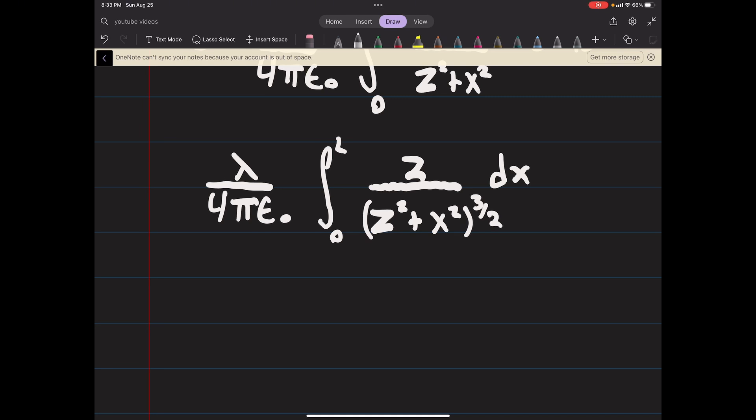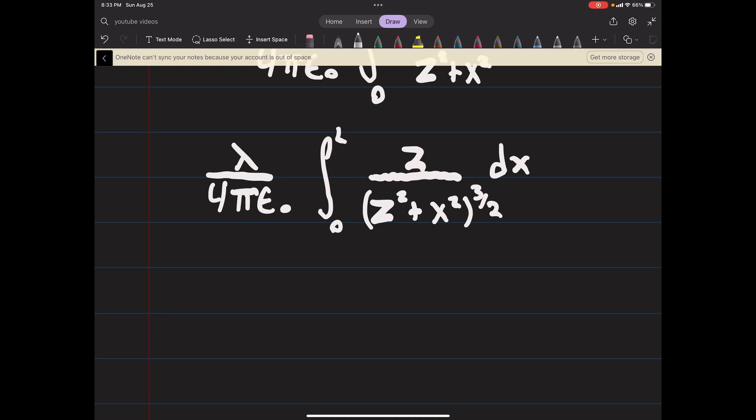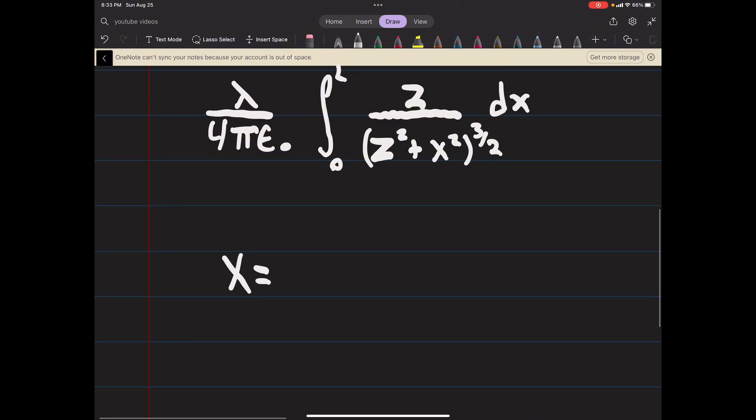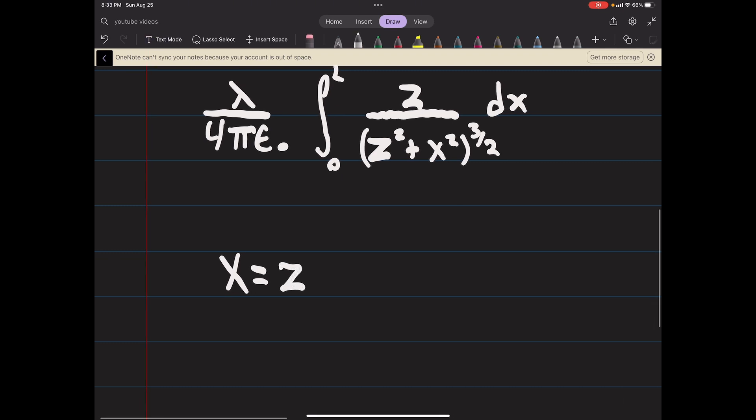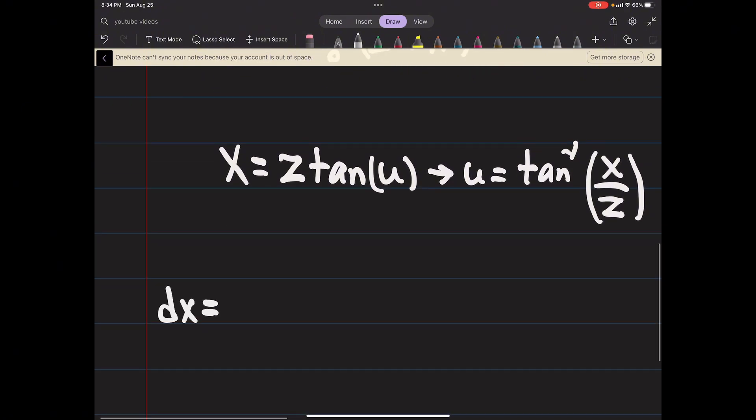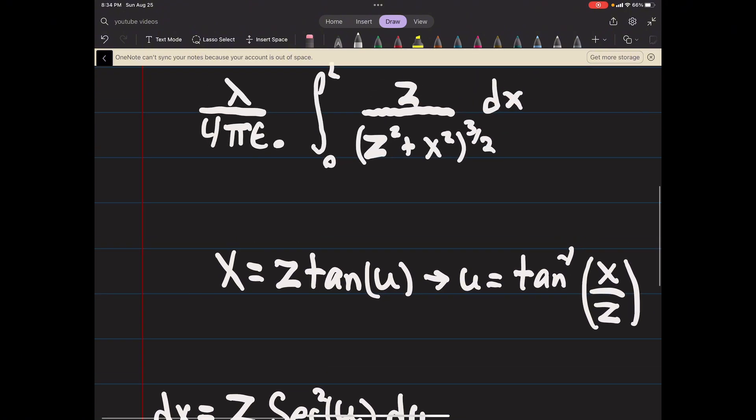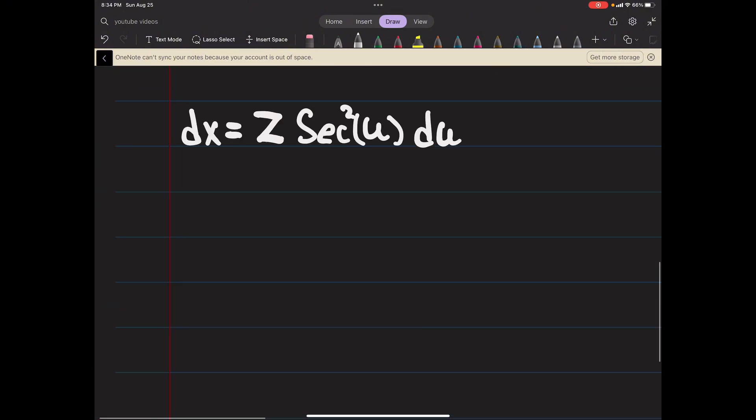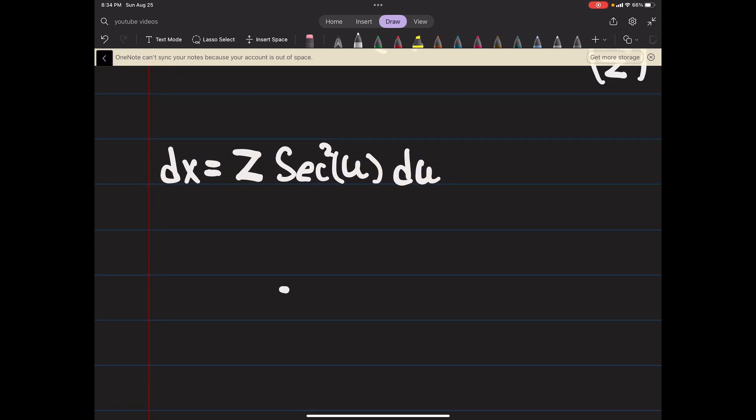The z is a constant we can factor that out. This will require a trig substitution. You could do a substitution, we'll call it x equals tangent of u, so u equals tangent inverse of x over z. Then you can differentiate both sides to find dx is z secant squared of u du.